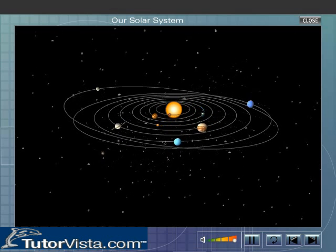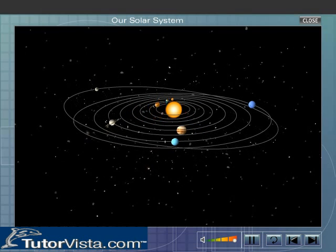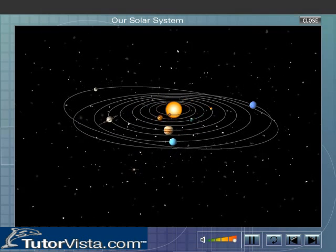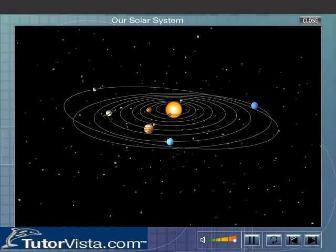The numerous comets, the asteroids and meteoroids. Our solar system is an oasis of light, heat and life.